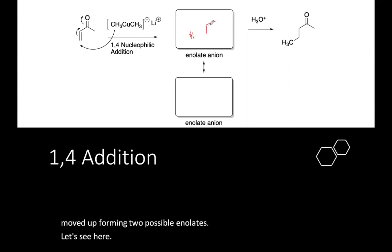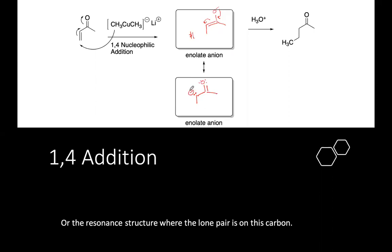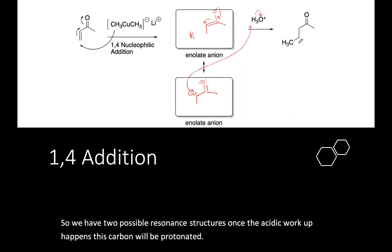The enolate - so we have two possible resonance structures. Once the acidic workup happens, this carbon will be protonated, yielding the saturated ketone and the nucleophile added in the four position.